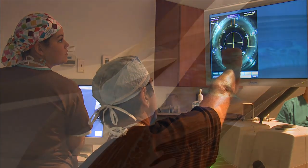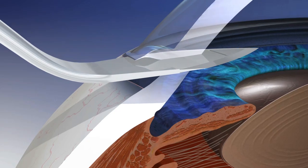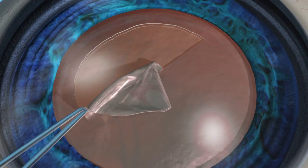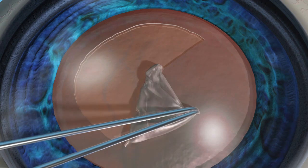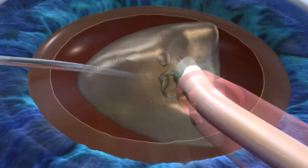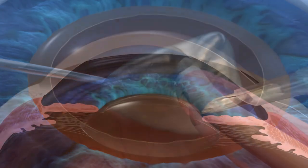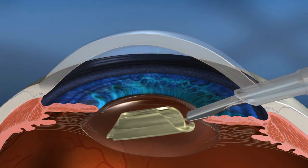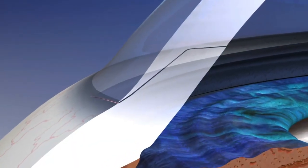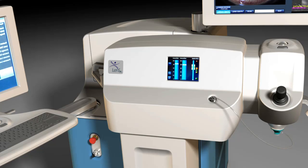Cataract surgery involves corneal incisions, capsular excess, a circular hole in the capsular bag, lens fragmentation, phacoemulsification, intraocular lens insertion, and incision closure. The LensX laser can assist with some of the most challenging steps.